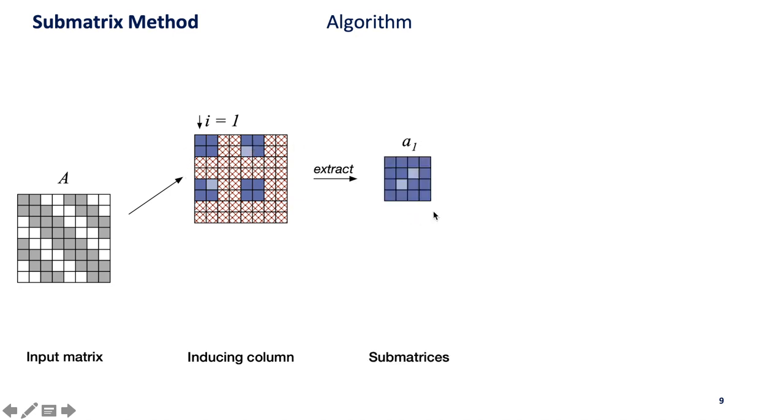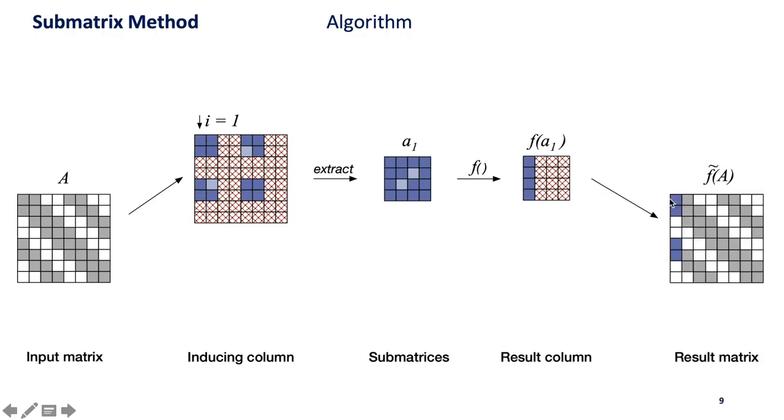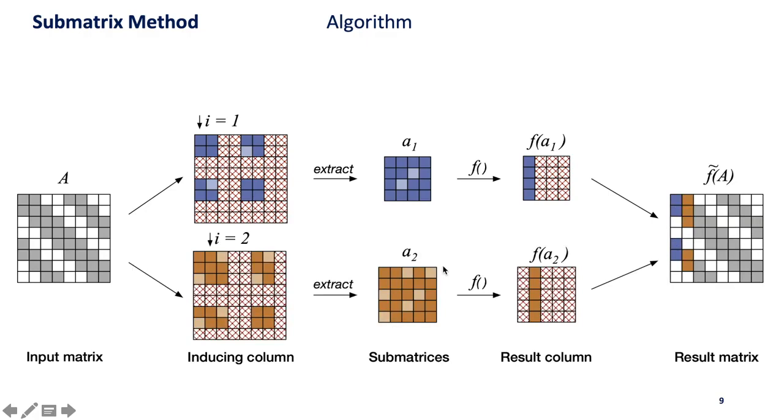This leaves us with these four by four values which we extract into a separate matrix, the first submatrix. We perform our function of interest and use the first column as a result for the approximate end result. We do the same for the second column and continue this for all n columns.